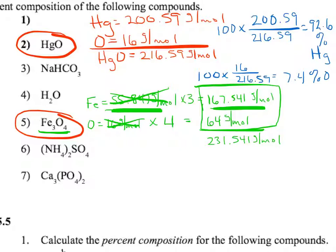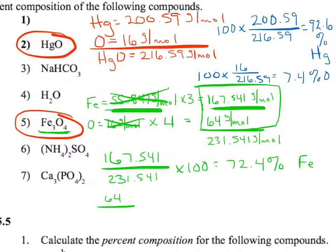So as we divide here we'll start by taking 167.541 divided by 231.541 times 100 and that will give us 72.4 percent iron. For the oxygen we'll do the same thing with the 64 instead. So we'll take 64 divided by 231.541 times 100 and that will give us 27.6 percent oxygen.